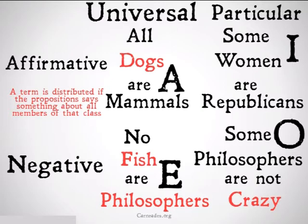We're going to have to remember that vocab term from all the way back at the beginning of our foray into categorical logic called distributed. We remember a term is distributed if the proposition says something about all members of that class. You can also more simply remember that universals distribute subjects while negatives distribute predicates. The terms highlighted in red are distributed.